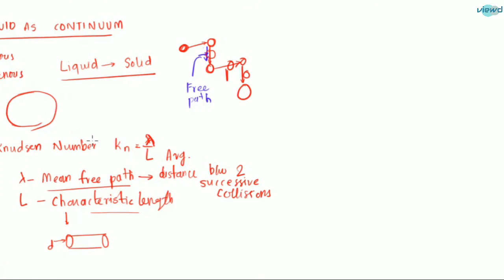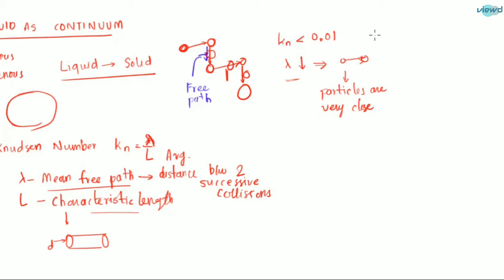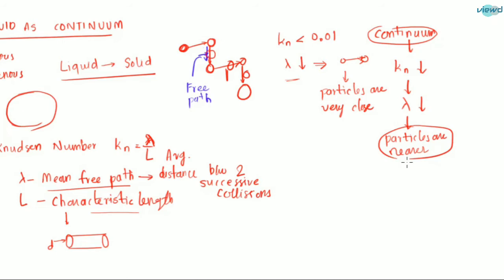So this is the Knudsen number. If the Knudsen number is very low — less than 0.01 — it means lambda is small. If lambda is small, the distance travelled between particle to particle is very less, which indicates that the particles are very close together. So continuum means a low Knudsen number, meaning lambda is very small and particles are nearer to each other.